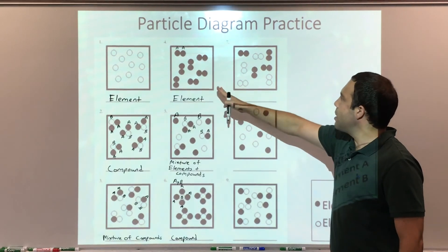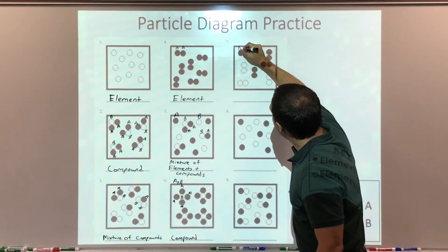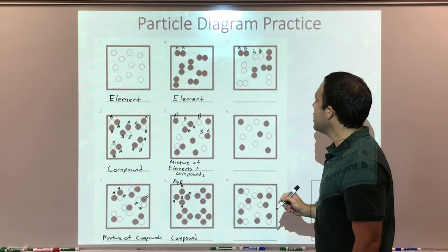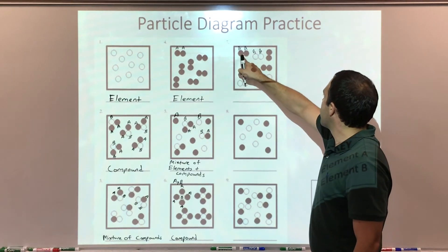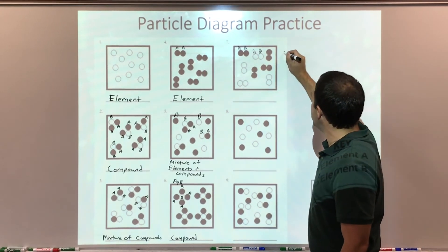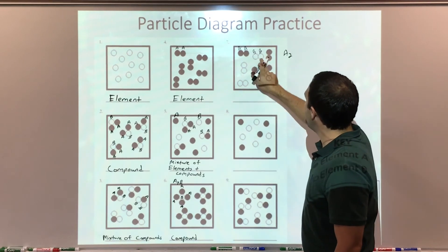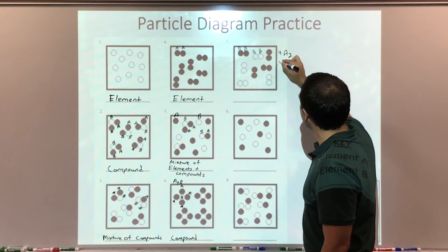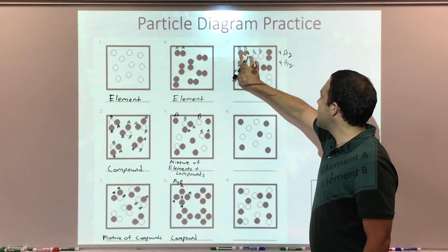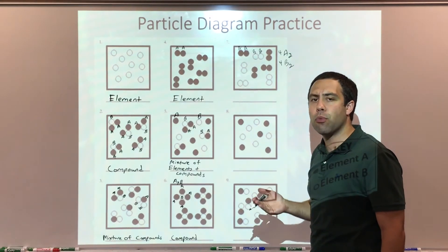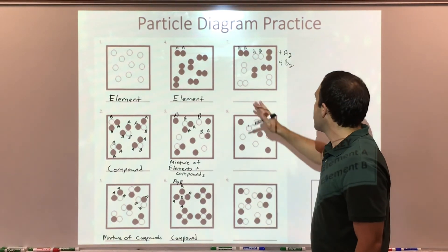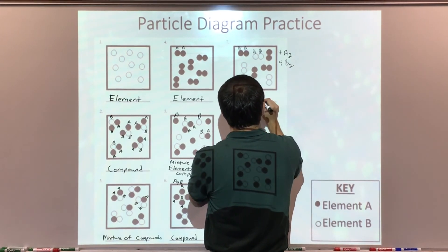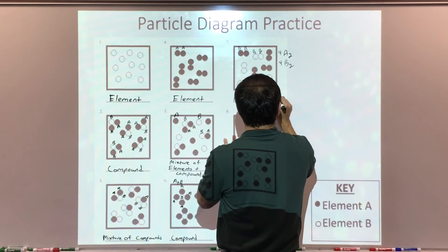Problem number seven is similar to problem number four, but here we have two A's combined and two B's combined. I have four A2's and four B2's. These are elements because they're the same element combined — not compounds. Compounds are two or more different elements combined. So for problem number seven, we have a mixture of element A and B — a mixture of elements.